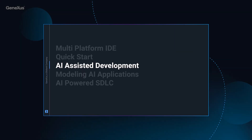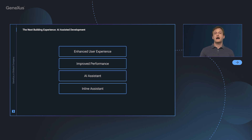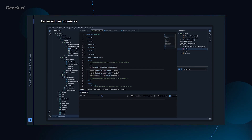Now, we are going to explore how generative artificial intelligence will assist us throughout the development process in the G-Nexus Next IDE. I would like to highlight four key aspects that we will observe as important modifications in the platform, all aimed at enhancing our entirely new development experience in G-Nexus Next.